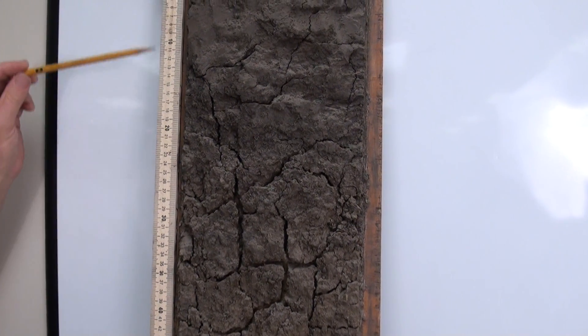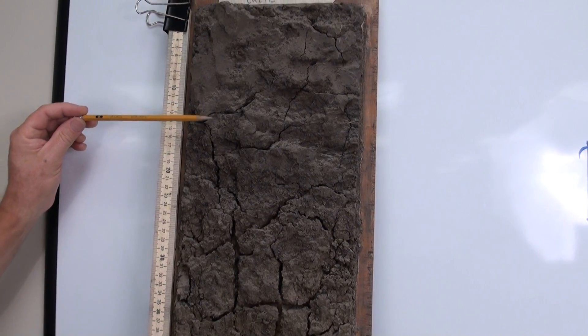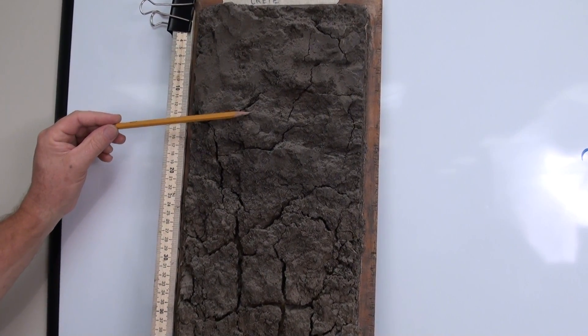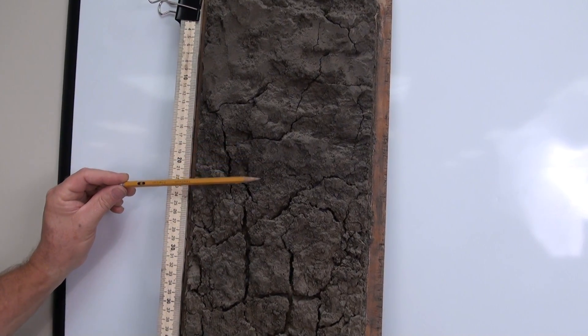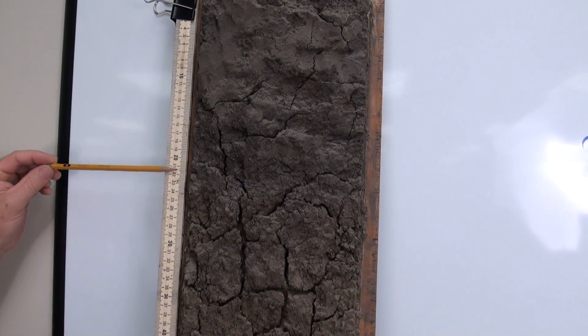Let's call this our AP layer down to 0 to 15 centimeters, and then our second A layer from 15 to right here at 22 centimeters.